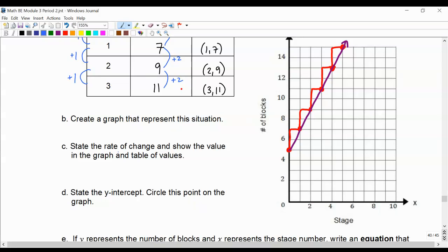And it says state the rate of change. So our rate of change is 2 over 1, or 2. We found that in the graph. That was our staircase. It went up 2 boxes and right 1.